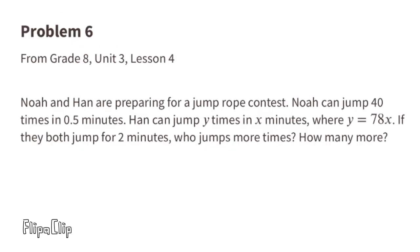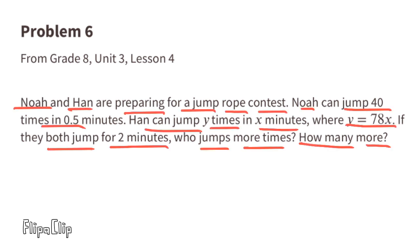Problem number six, from eighth grade Unit 3 Lesson 4: Noah and Han are preparing for a jump rope contest. Noah can jump 40 times in 0.5 minutes — that's a half a minute. Han can jump y times in x minutes, where y equals 78x, meaning 78 jumps for every minute. If they both jump for 2 minutes, who jumps more times and how many more?